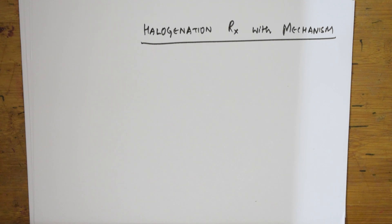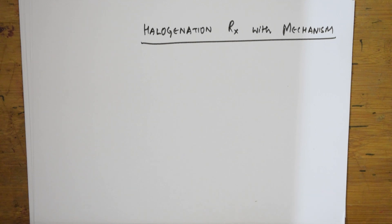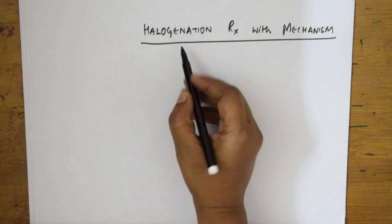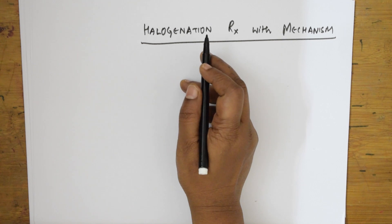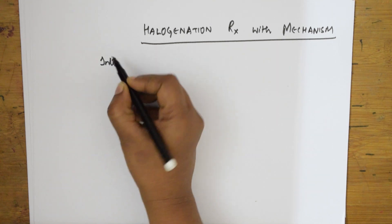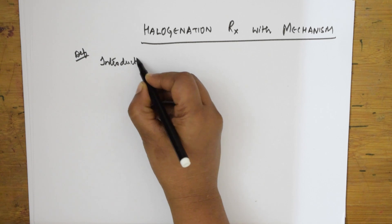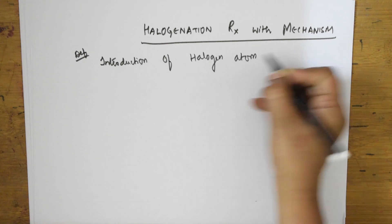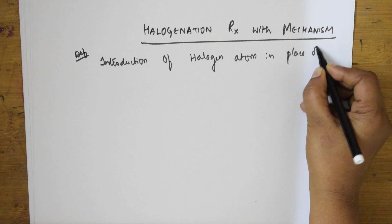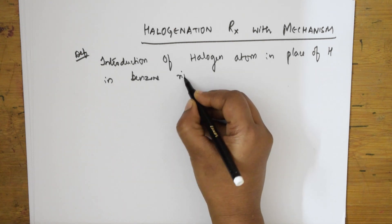Now let's try the halogenation reaction mechanism. Halogenation is nothing but the addition of a halogen group. Halogen can be chlorine — here we are picking up chlorine. So whenever you have a halogenation reaction, it is a replacement of, or introduction of, a halogen atom in place of hydrogen in the benzene ring. That is the definition of halogenation.